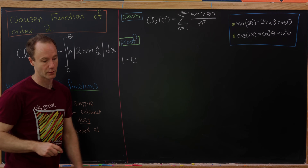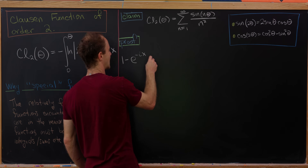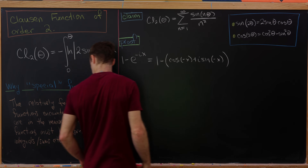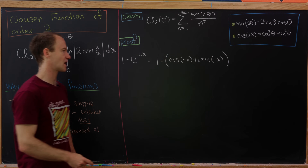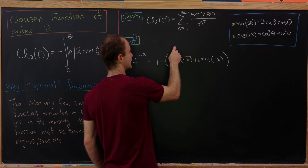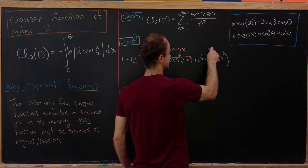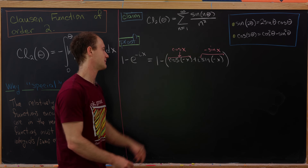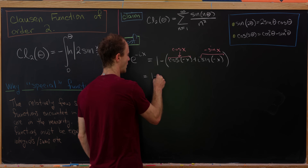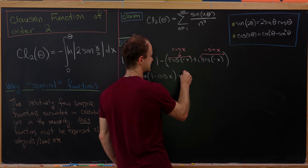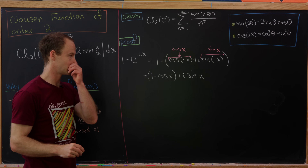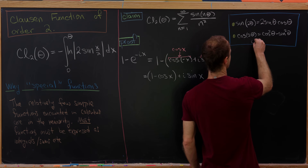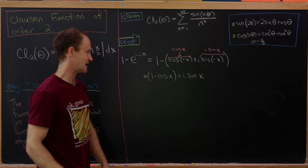We begin by considering the object 1 minus e^(−ix). Using Euler's formula, that's 1 minus cosine(−x) plus i·sine(−x). Using the fact that cosine is even and sine is odd, this becomes 1 minus cosine(x) plus i·sine(x). We're about to use the double angle formulas with θ = x/2 to expand each of these terms.